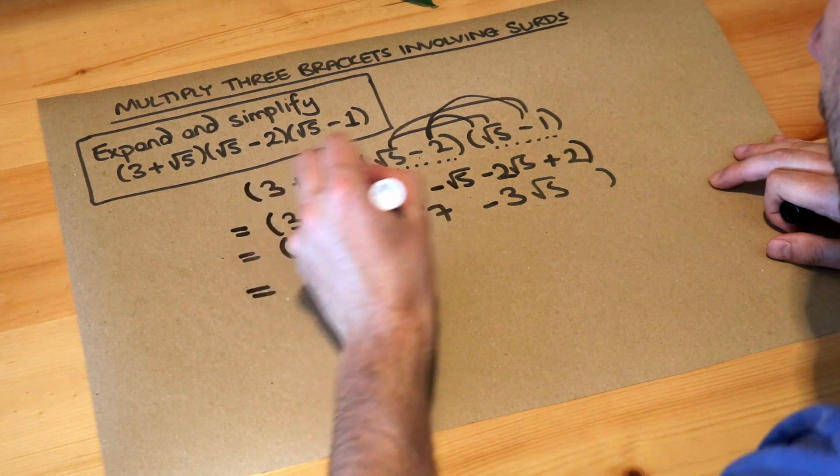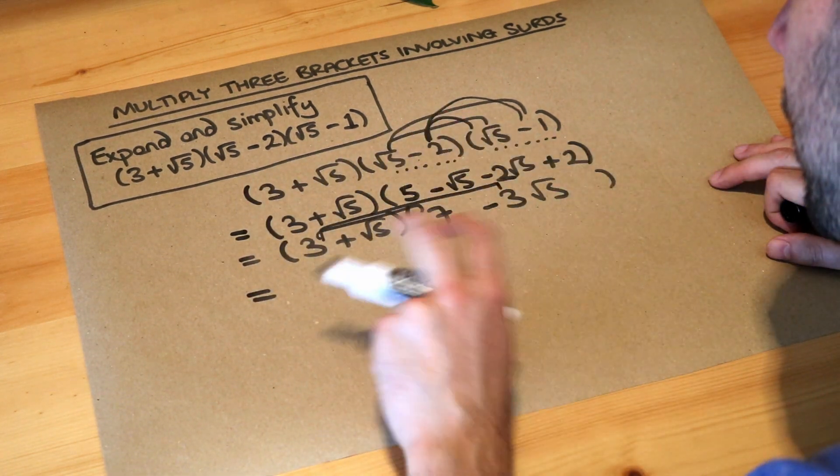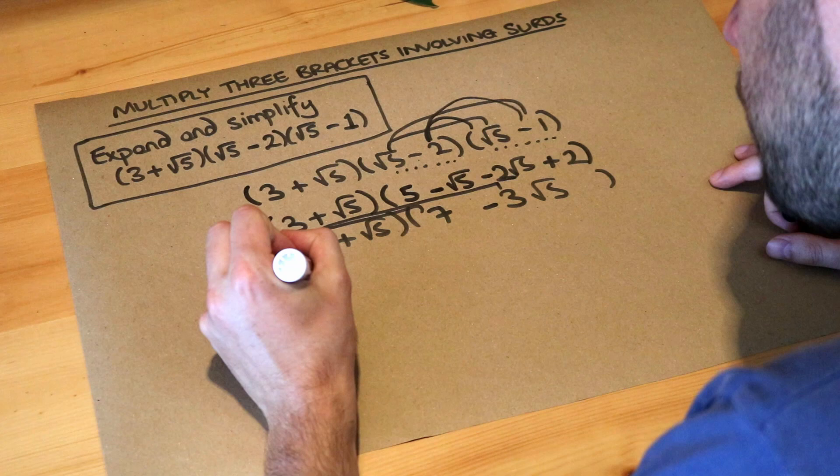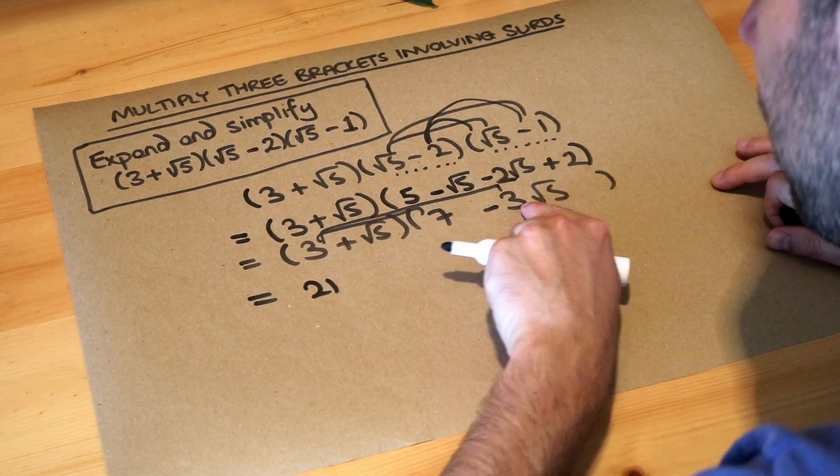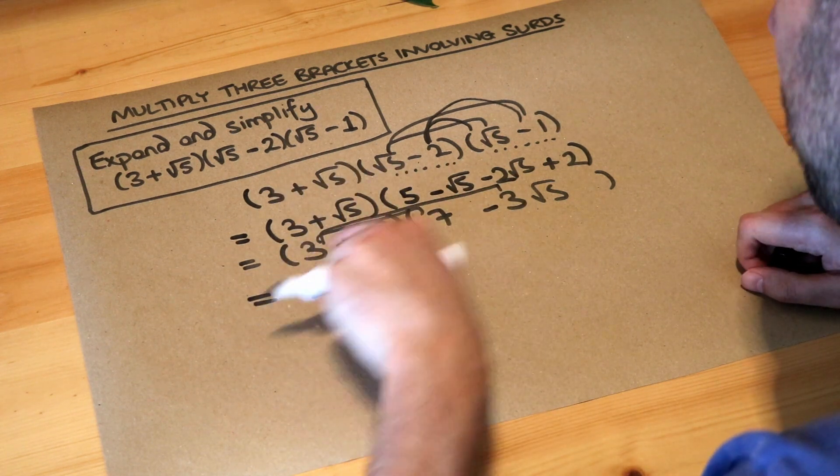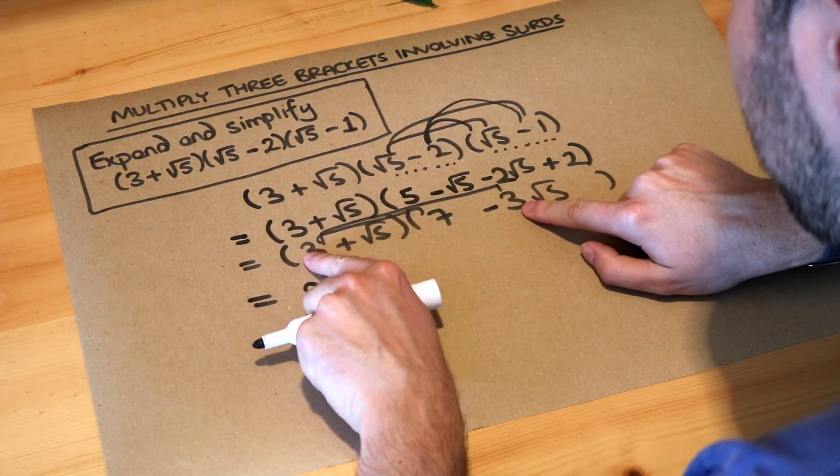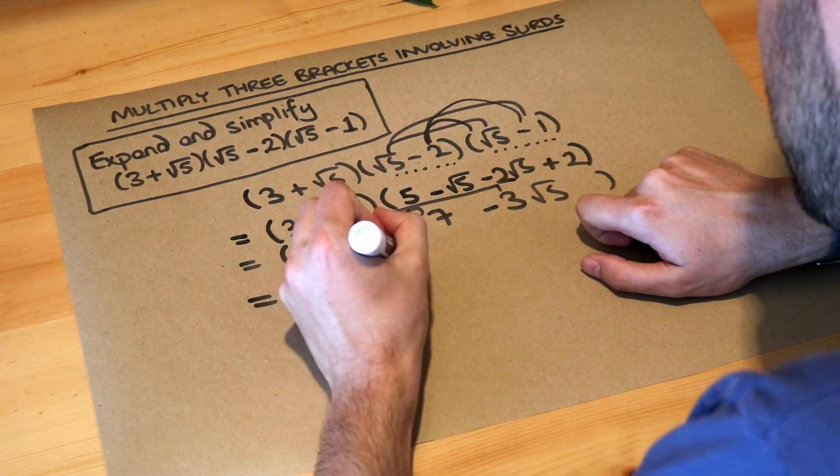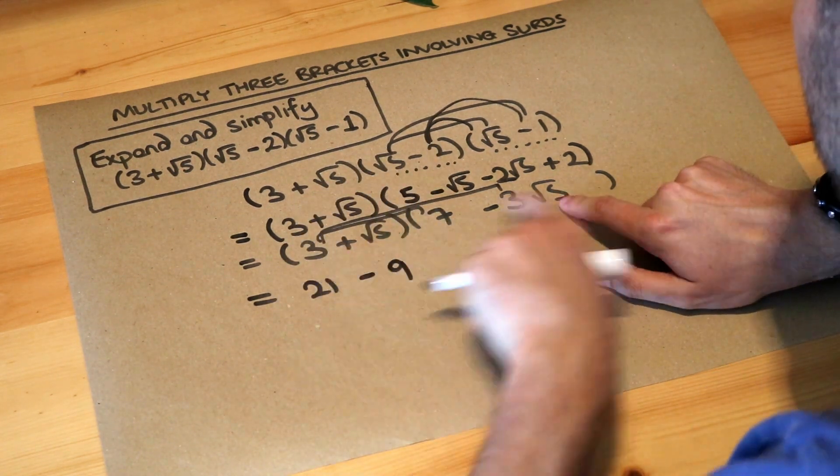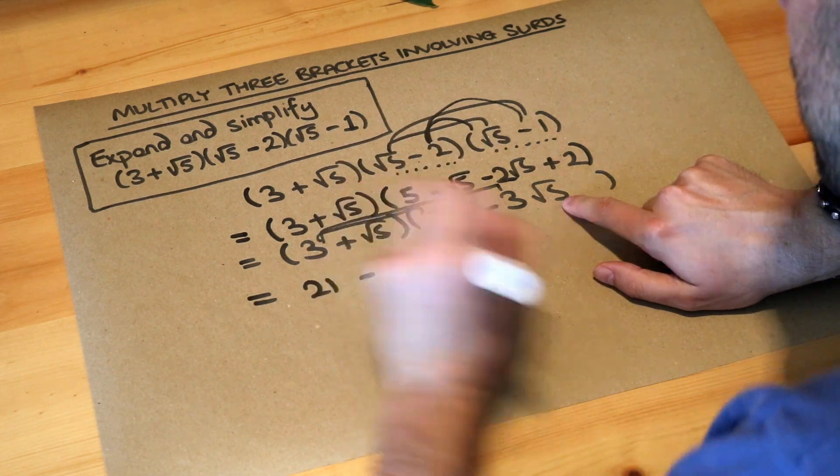We do 3 times 7 and 3 times -3√5. 3 times 7 is 21. 3 times -3√5 is negative, since positive times negative is negative. Multiplying the non-surd parts: 3 times 3 is 9, and we've also got that √5, so it's -9√5.